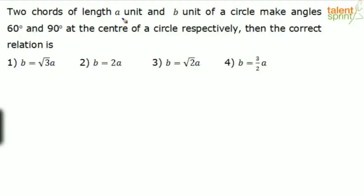Two chords of length a units and b units of a circle make angles 60 degrees and 90 degrees at the center respectively. The correct relation is: option 1: b = √3·a, option 2: b = 2a, option 3: b = √2·a, option 4: b = 3/2·a.